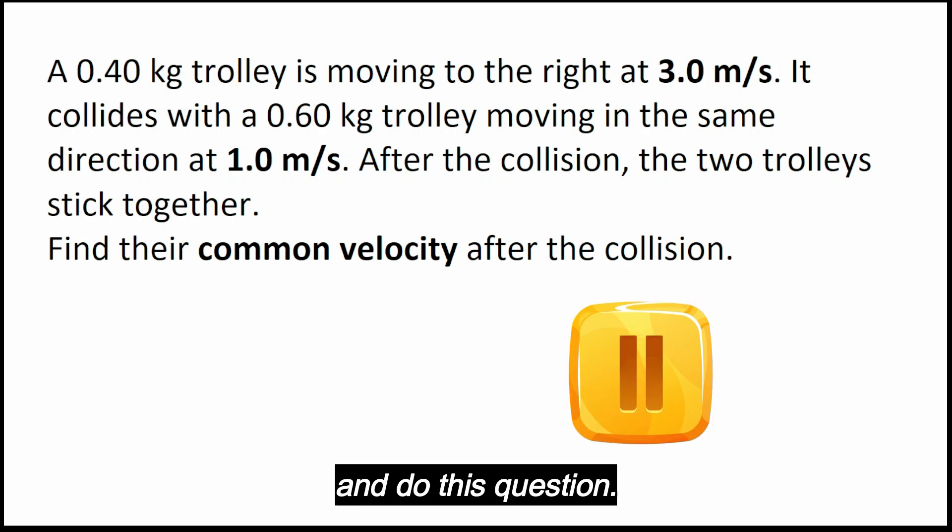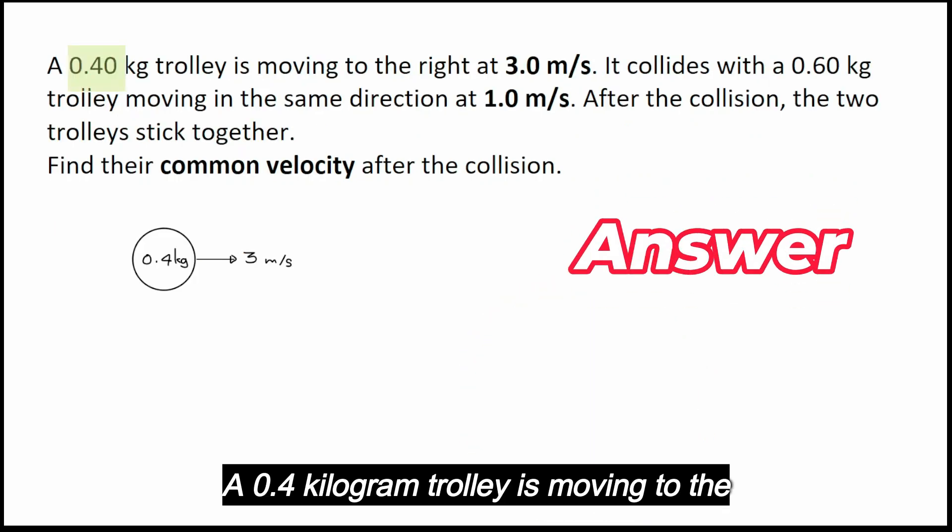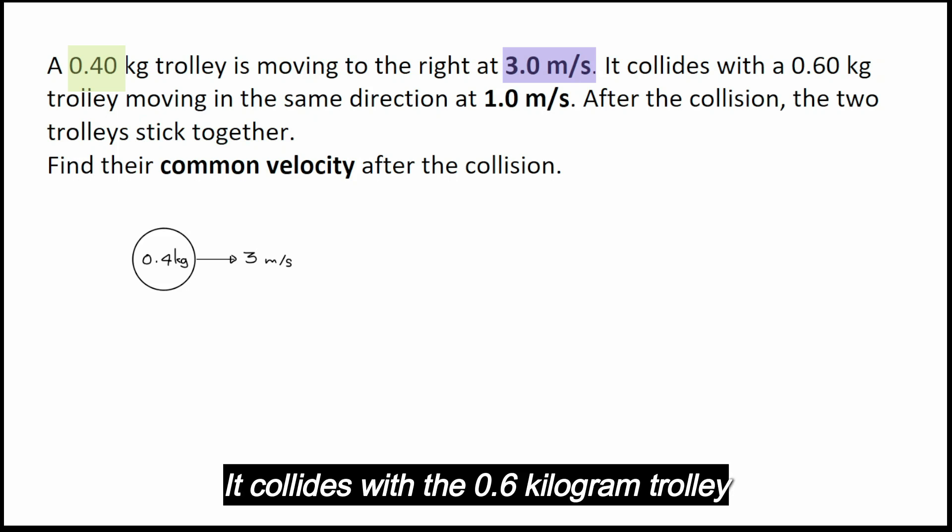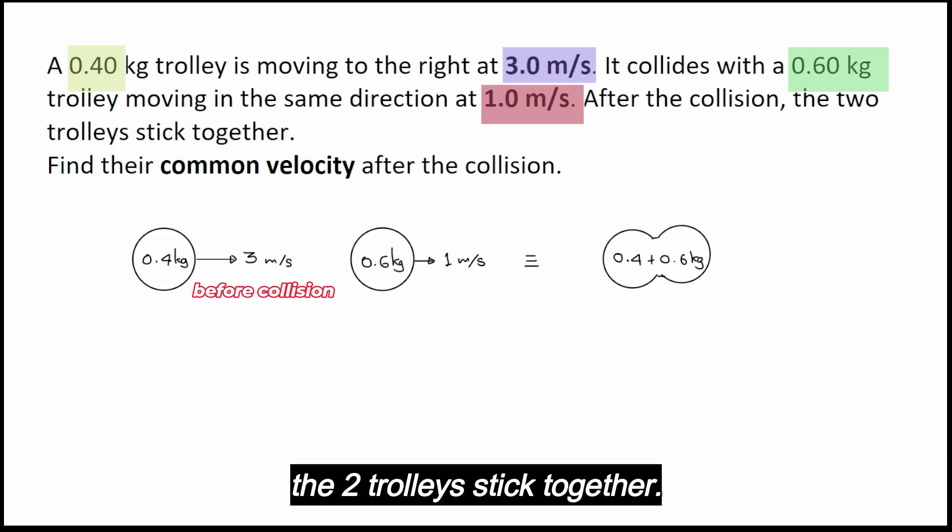When you are ready for the answer, press play. A 0.4 kilogram trolley is moving to the right at 3 meters per second. It collides with a 0.6 kilogram trolley moving in the same direction at 1 meter per second. So this is before collision. After the collision, the two trolleys stick together.